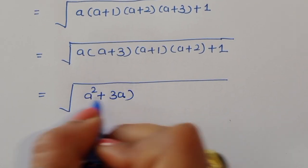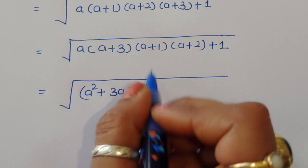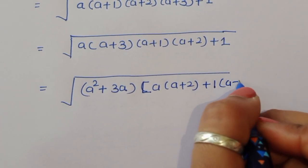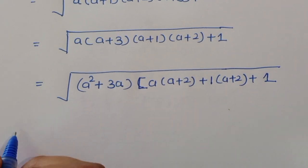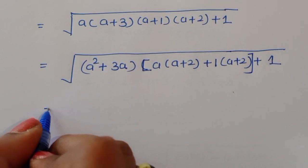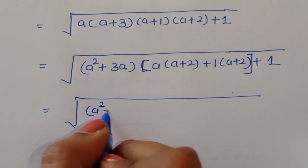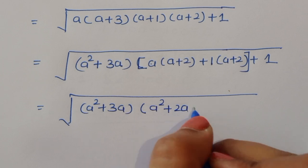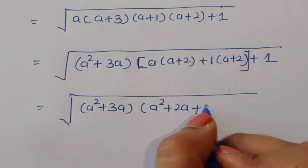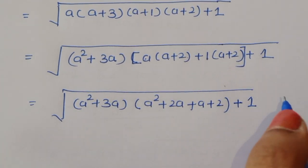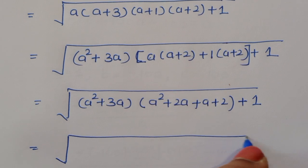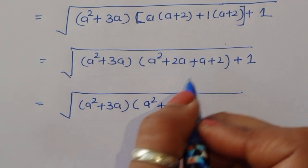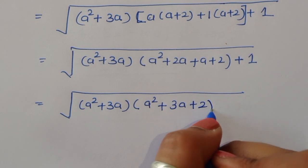Expanding (a+1) times (a+2) gives a squared plus 2a plus a plus 2, which is a squared plus 3a plus 2. So we have (a squared plus 3a) times (a squared plus 3a plus 2) plus 1.